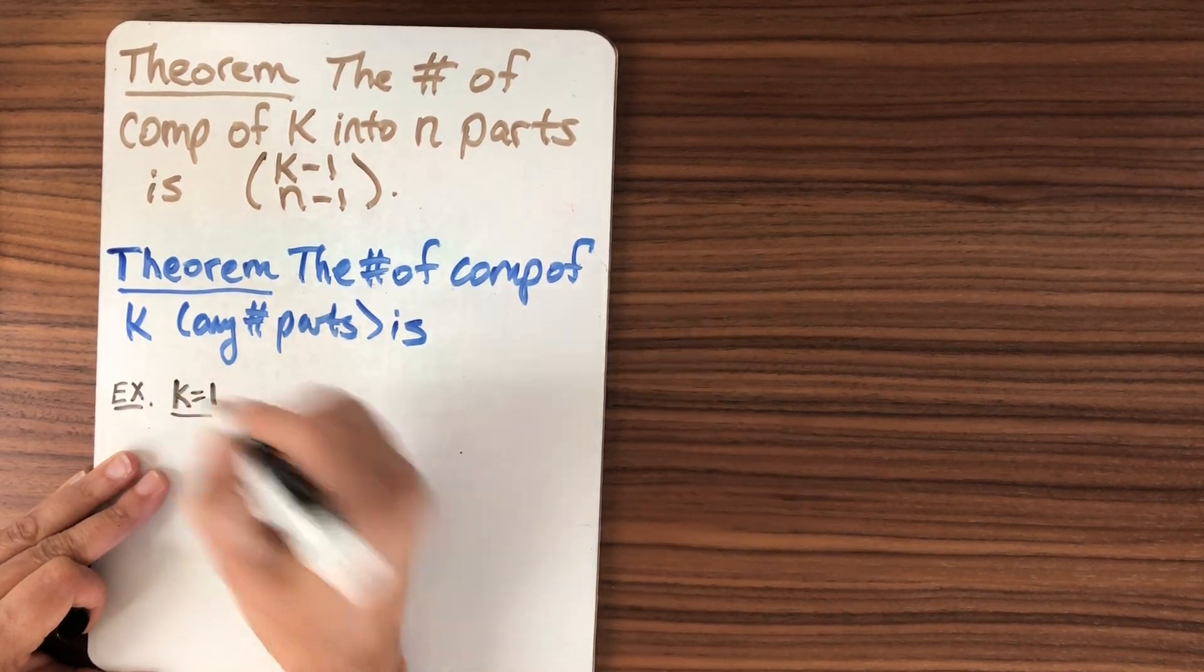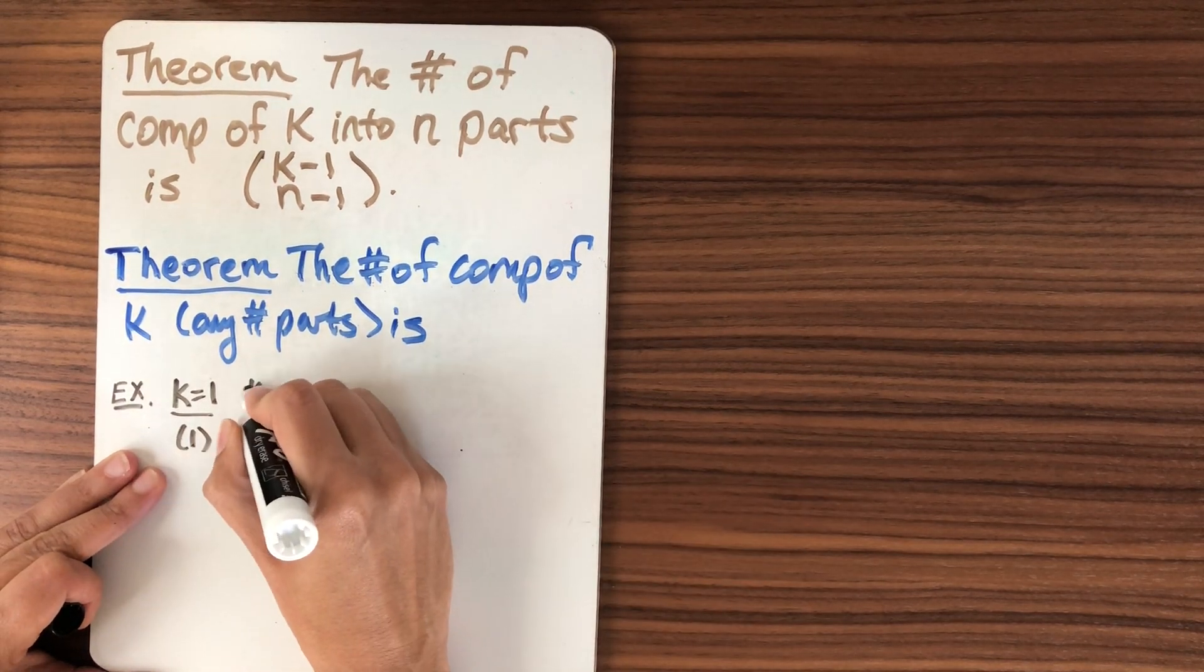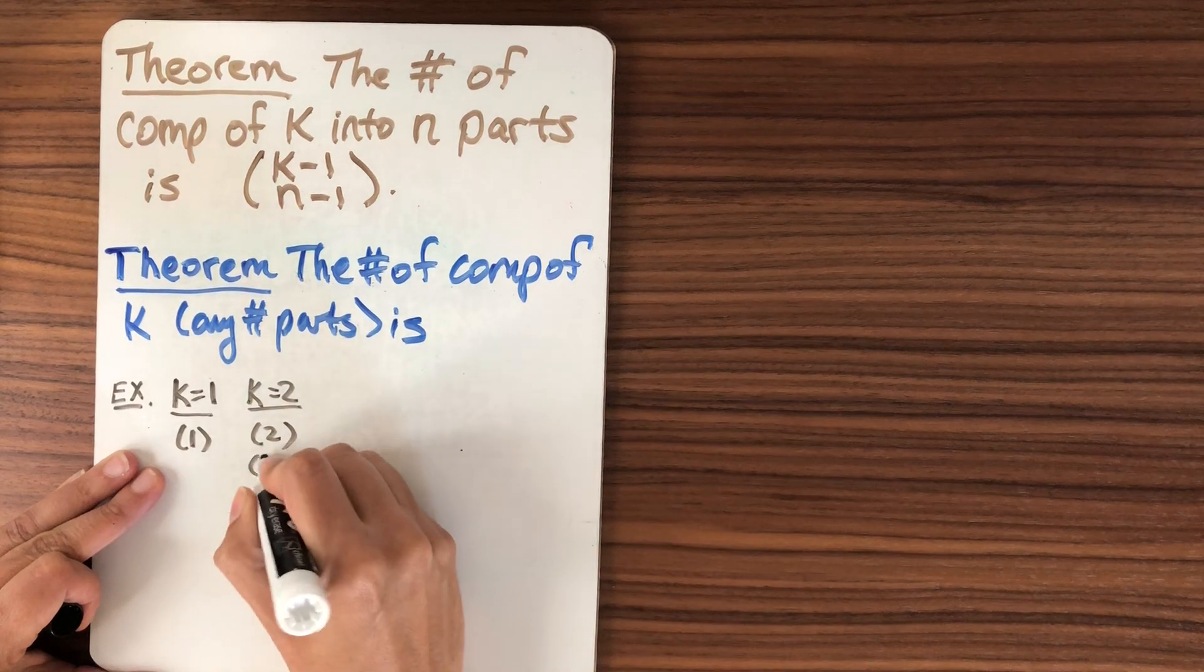So let's just start small. If k equals one, what are the compositions? Well, this is it. What are the compositions of two? Well, I could have two, or I could have one, one.